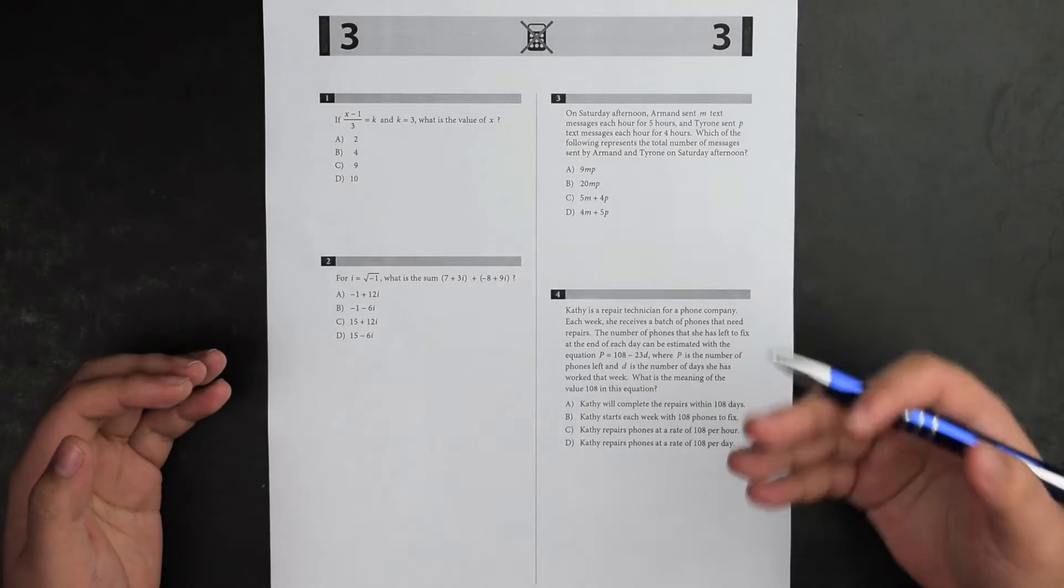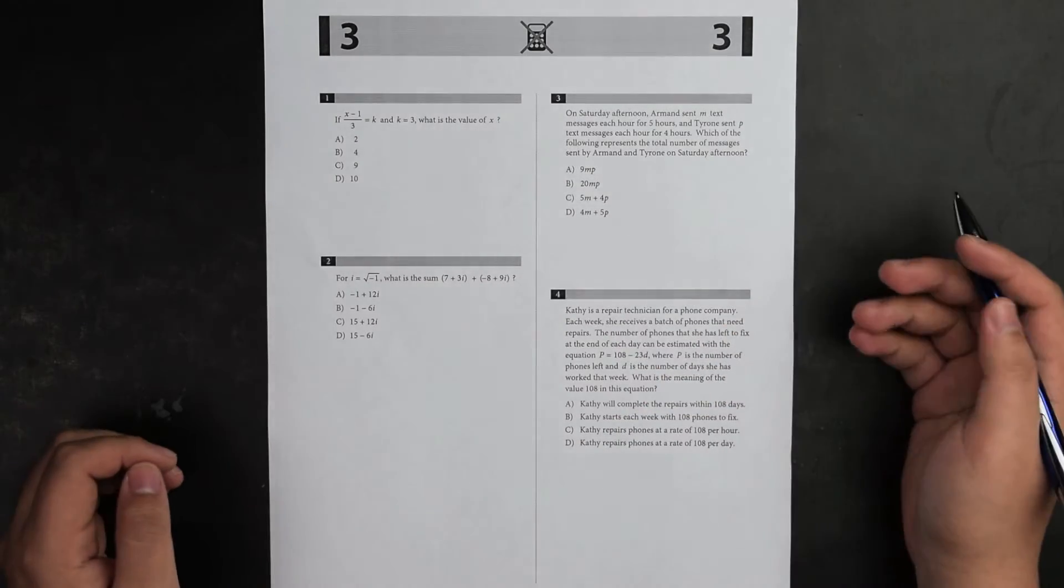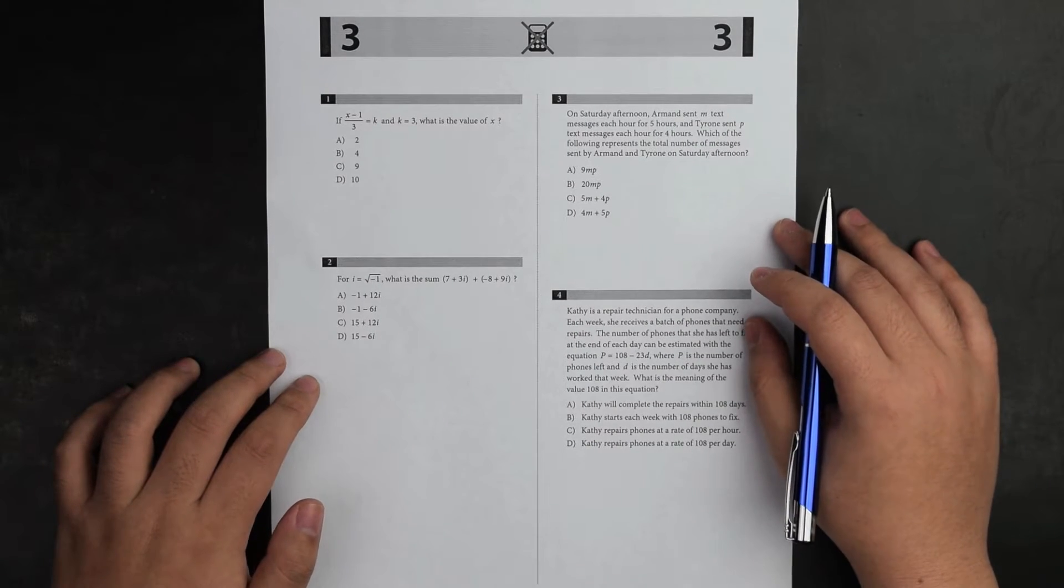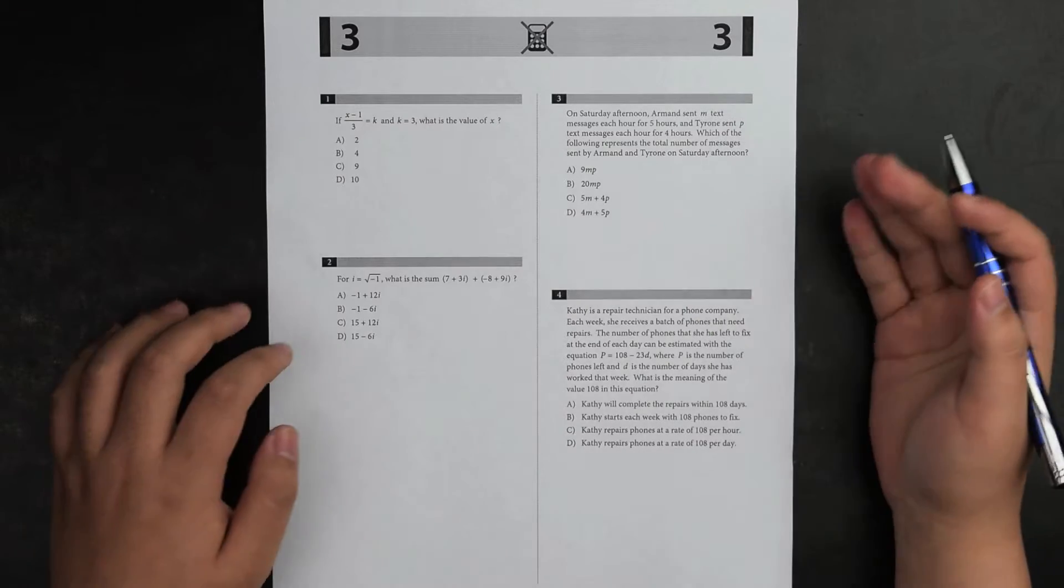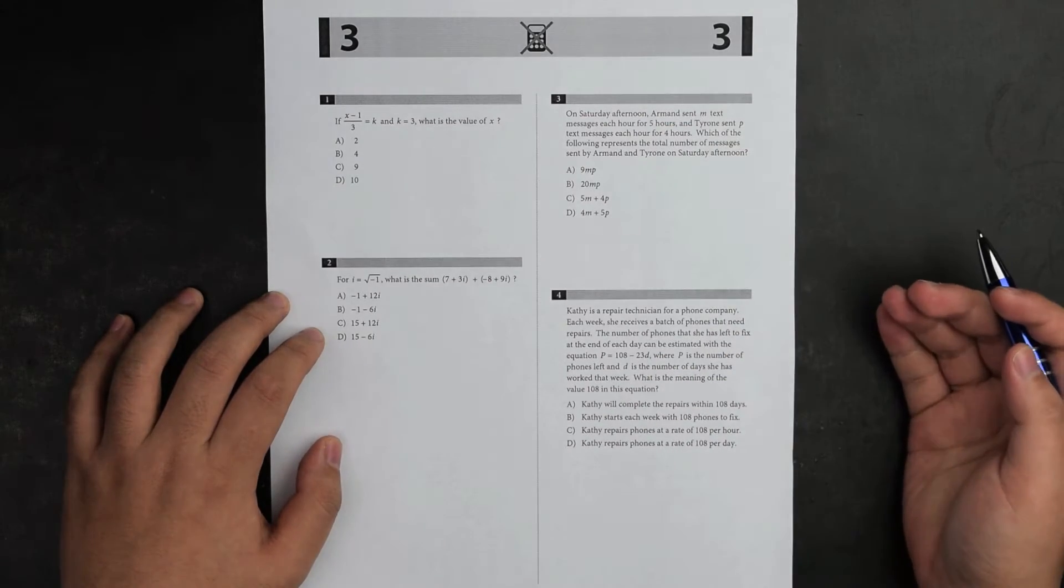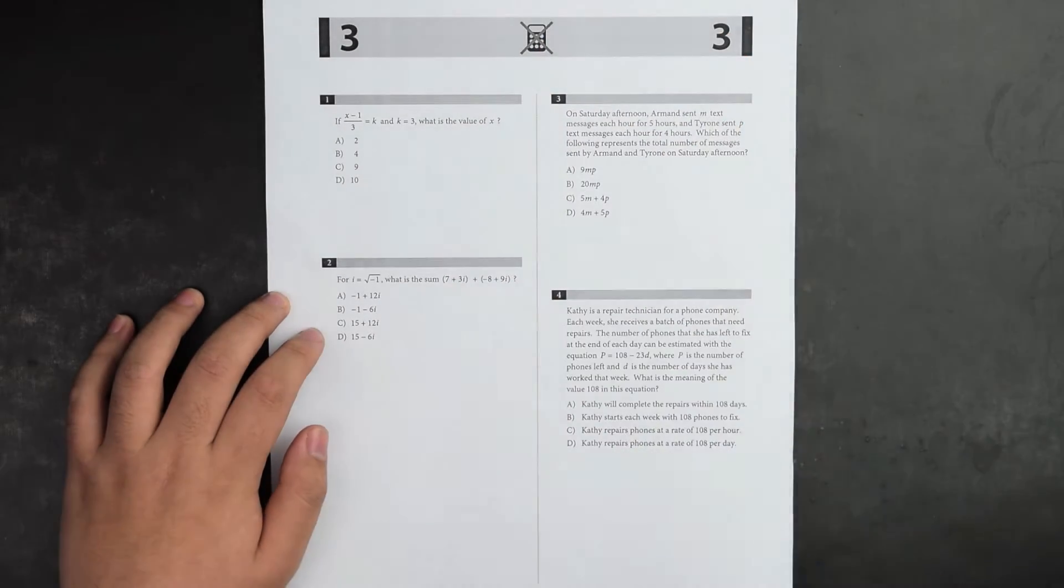SAT College Board does provide explanations in word, but hopefully this will help you understand the concepts more. If you go to practice exam one section three, this is the math portion. This is the first question, I'll do the problem fast then explain it thoroughly.